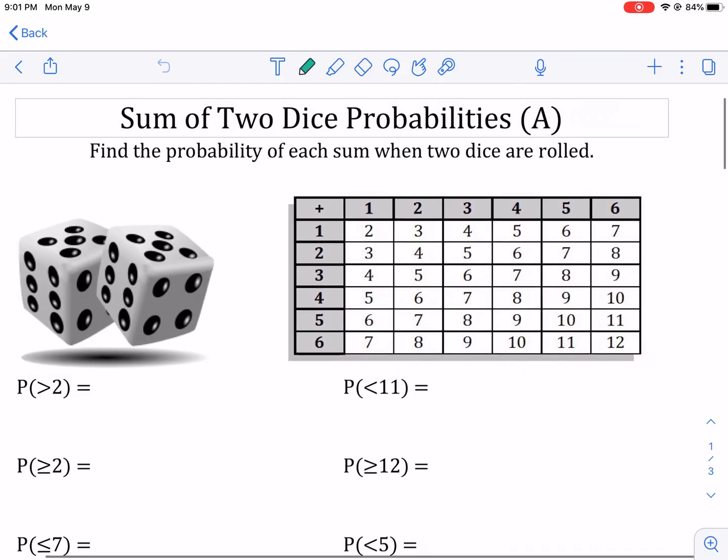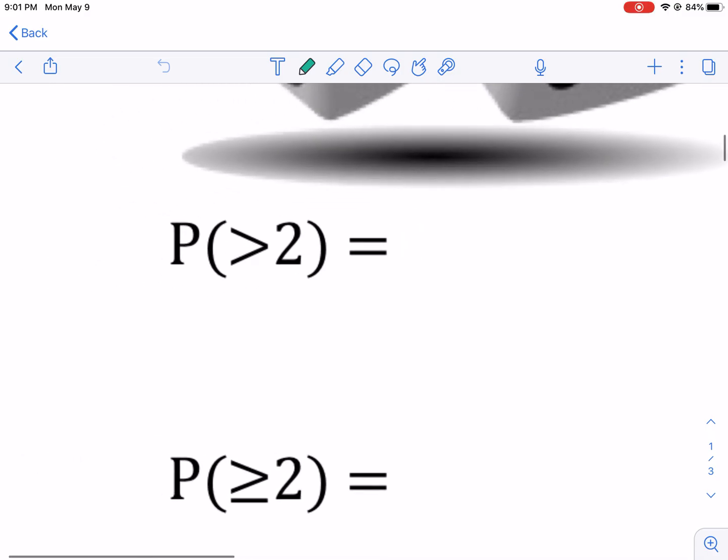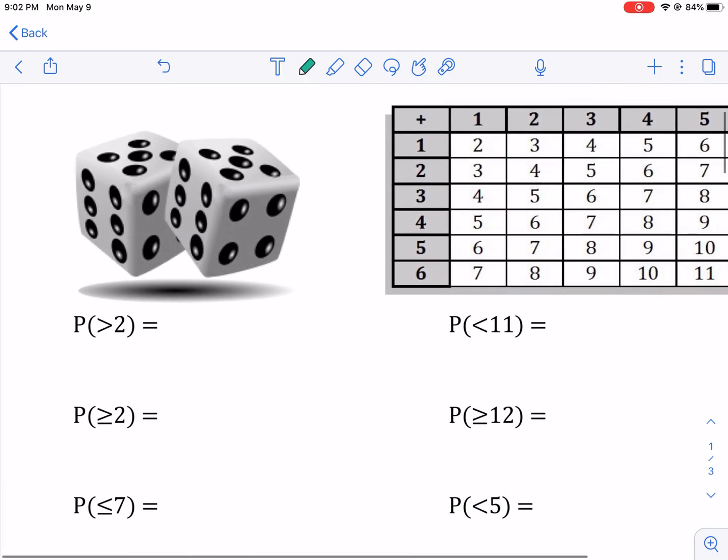Anyway, the problem at hand is finding the probability when we roll two dice. Super relevant, especially if you're a big fan of board games, Settlers, Catan, Monopoly, Risk, whatever it is. Two dice probabilities. How do you do it? And we also need to understand what is this talking about, this P and all these numbers and inequalities.